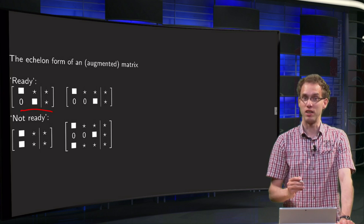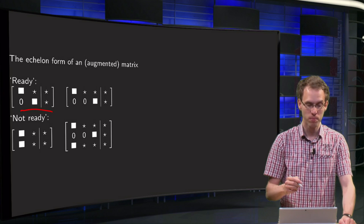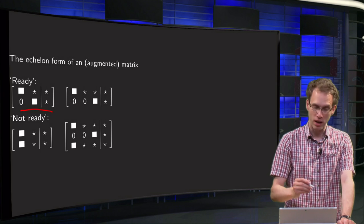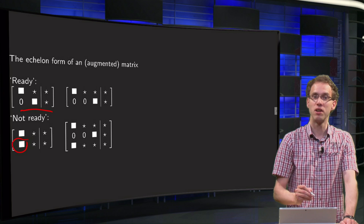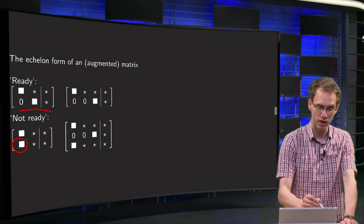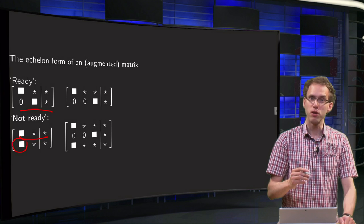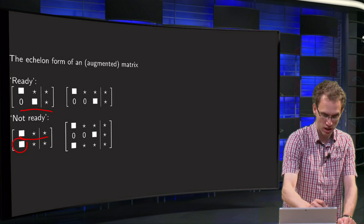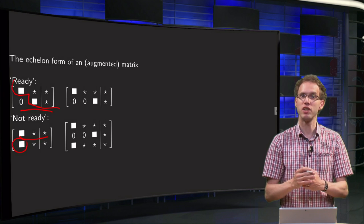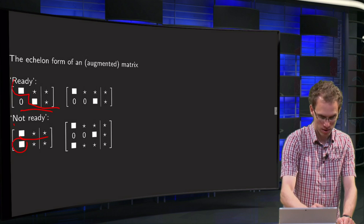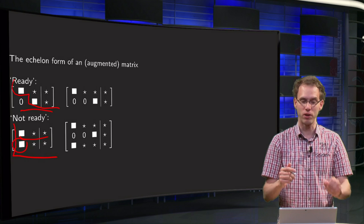Looking at those first augmented matrices: this one is ready, we cannot reduce it further. The one below that, we could reduce further because we can eliminate this non-zero element over here using the first row. So the first one is ready, the second one is not. You can see that if you make a staircase around those first non-zero elements, if you have a staircase then you are ready. Here the staircase would fall down quite far, so here we are not ready.